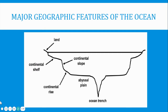We're going to talk today about the major geographic features of the ocean: land, continental shelf, continental slope, continental rise, the abyssal plain, and ocean trench.